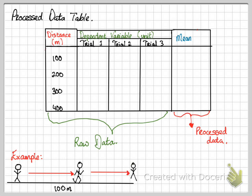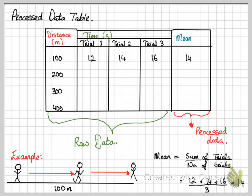The first time they do it in trial one, it takes them 12 seconds. The next time they do it is 14 seconds, and the third time they do it is 16 seconds. So we've repeated the experiment three times to get better and more reliable results. We know that the formula for mean is the sum of the trials over the number of trials, so that will give you 14. This is processed data.